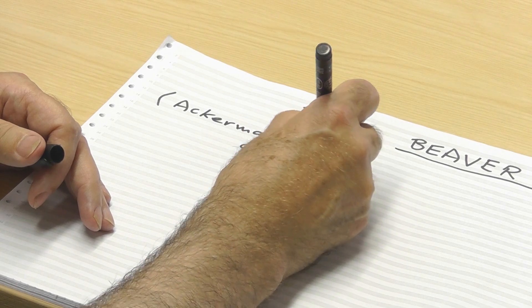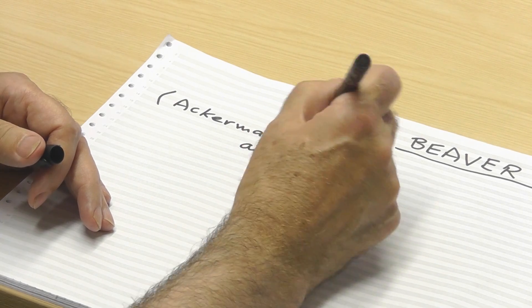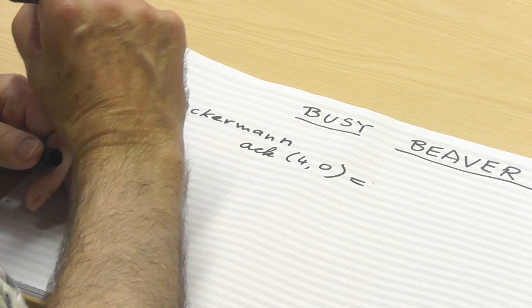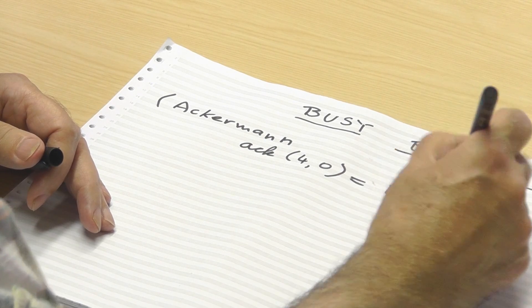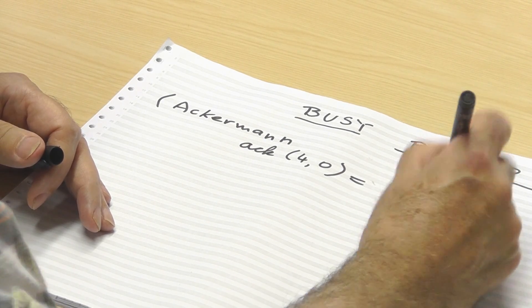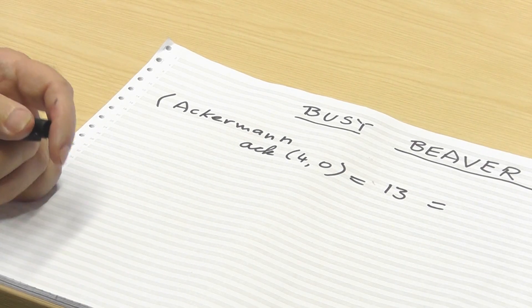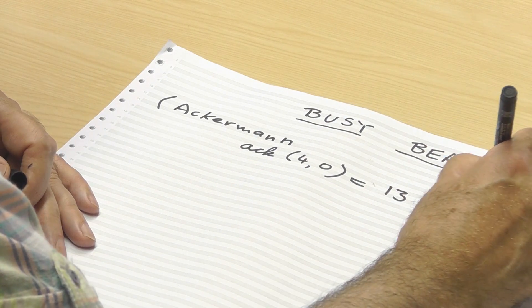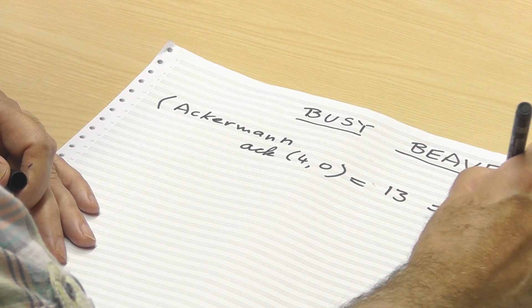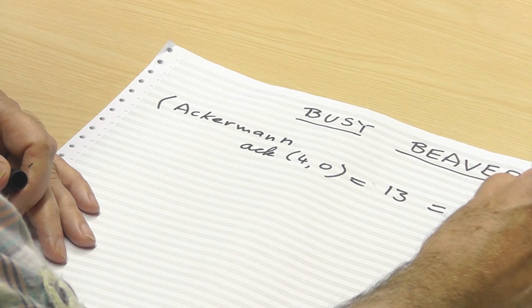We saw that Ackermann of 4,0 was 13, and in the interest of pointing out a general pattern that emerges in Ackermann, I would point out that 13 just happens to be 2 to the power 4 — which is 16 — minus 3.